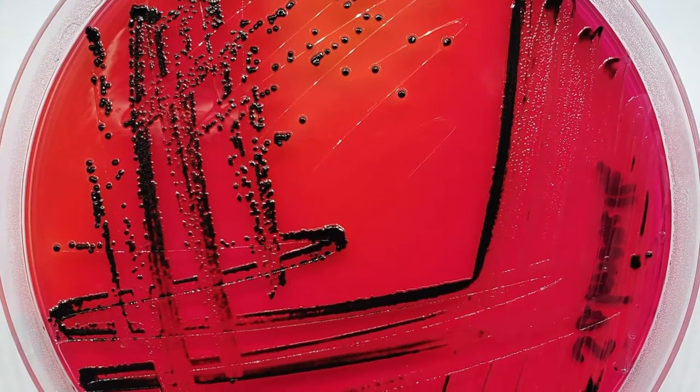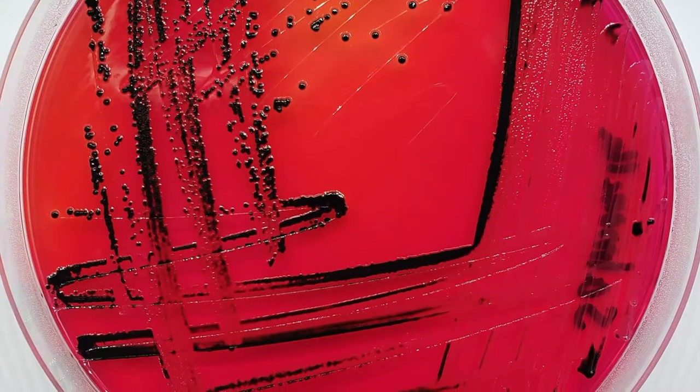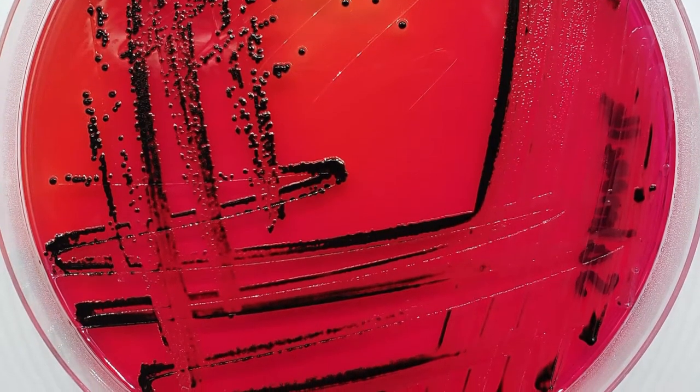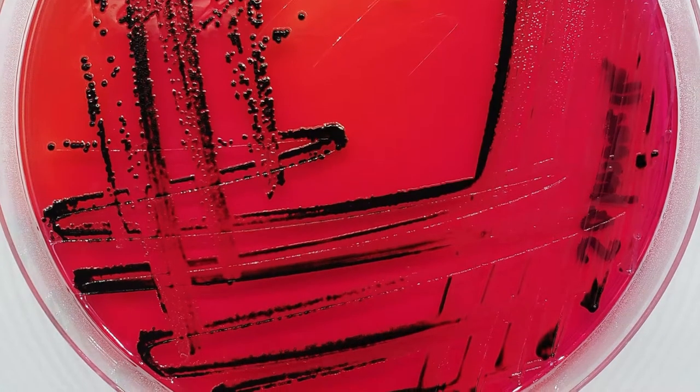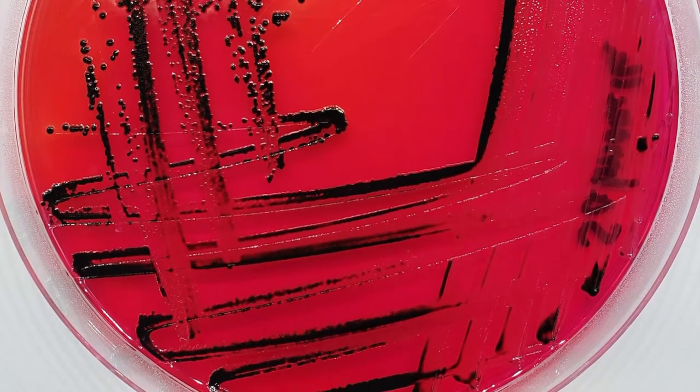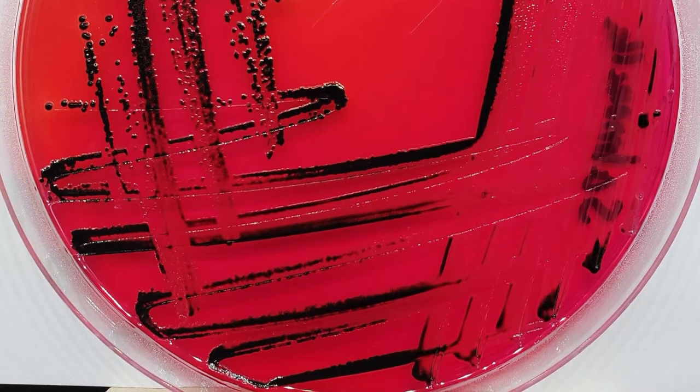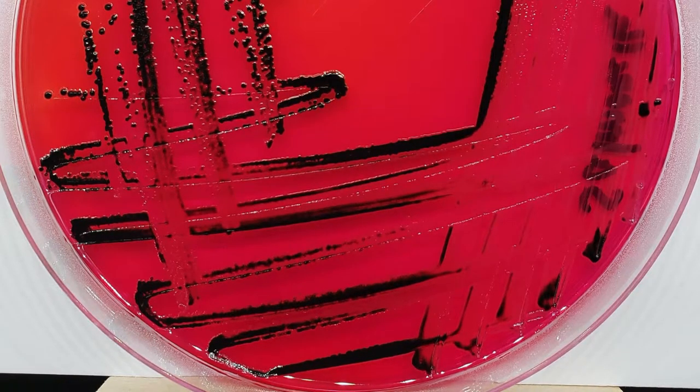We often use selective media, such as the plate shown here, XLT4, for the isolation of salmonella, if we're interested in trying to identify a particular bacterial species. While these media are very helpful as a primary culture step, we often only perform additional analyses on pure cultures grown on blood agar, therefore requiring a subculture step from our primary media.